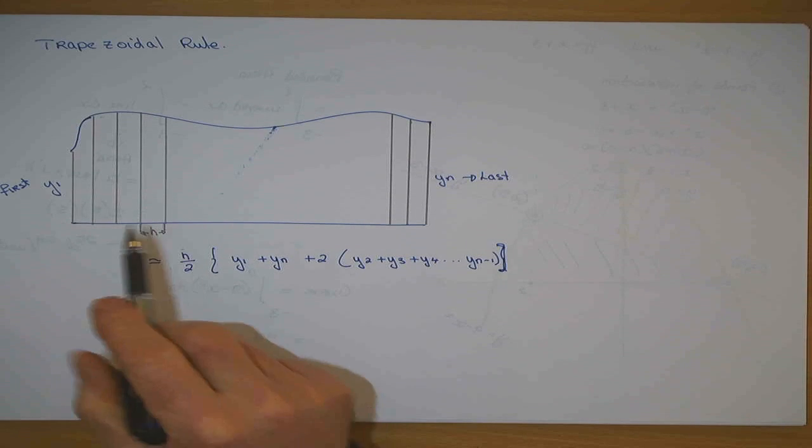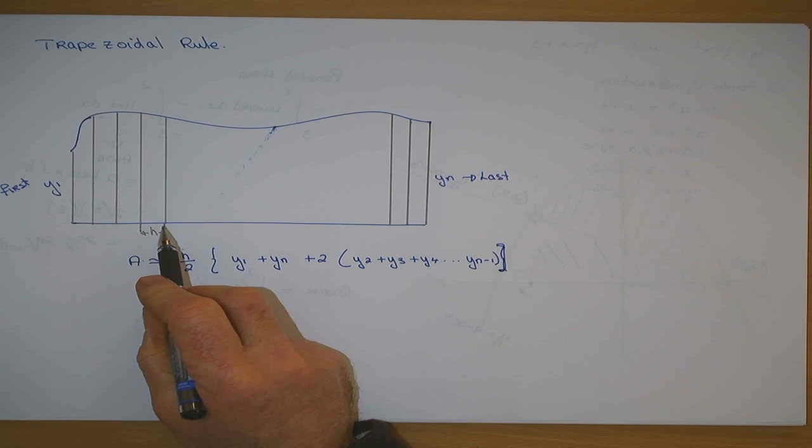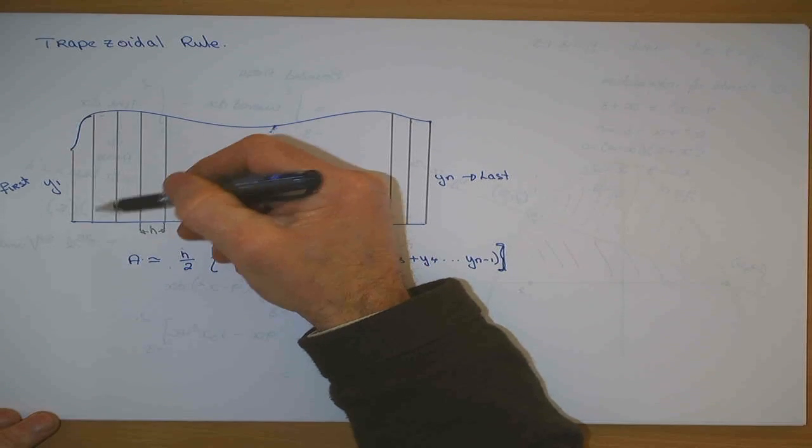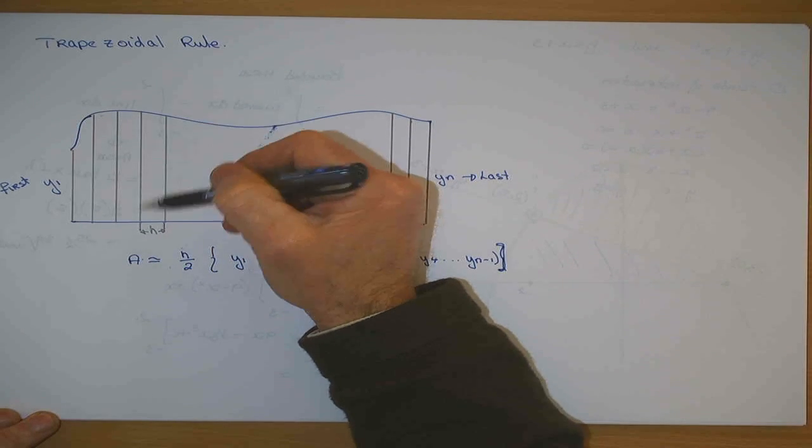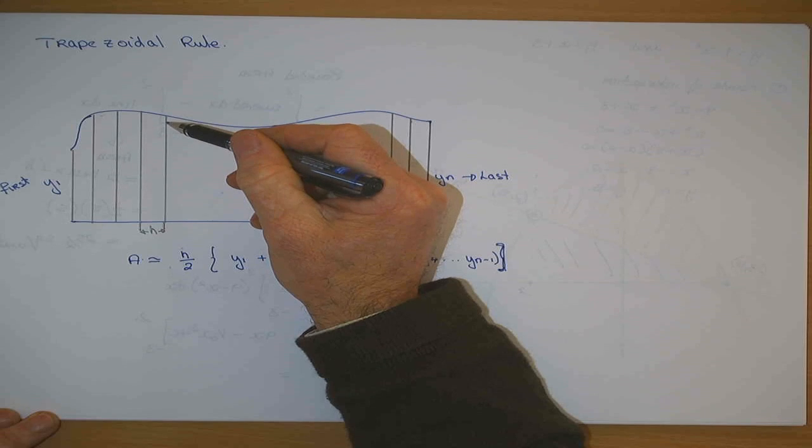So in order to use this formula, what do you need to know? You need to know the distance between each rectangle, and you need to know the length of each one of them perpendicular lines.